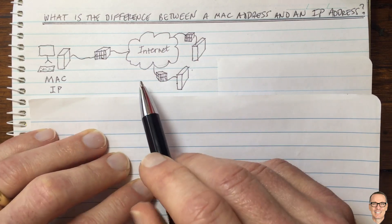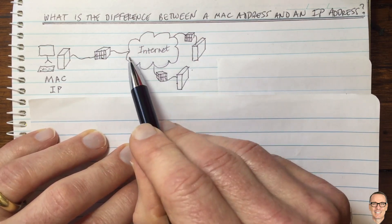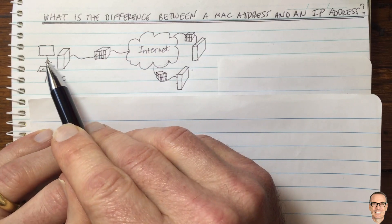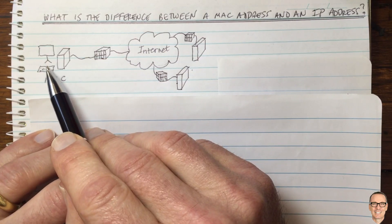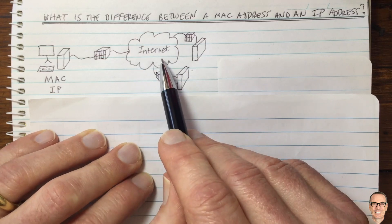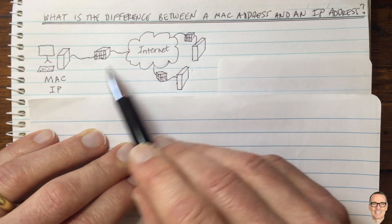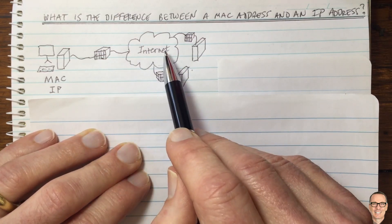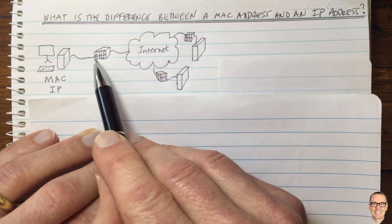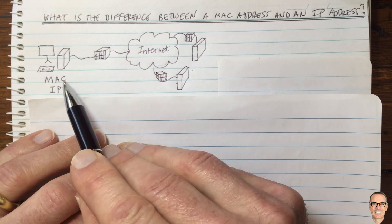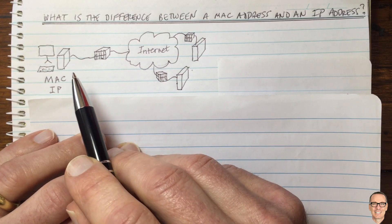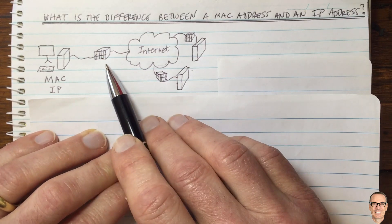So what does that really mean? Well, when a packet is in the network — say you have an application like a video stream that's been packetized — it uses the IP address to find its way through the network. When it's on a local link, it uses the MAC address.